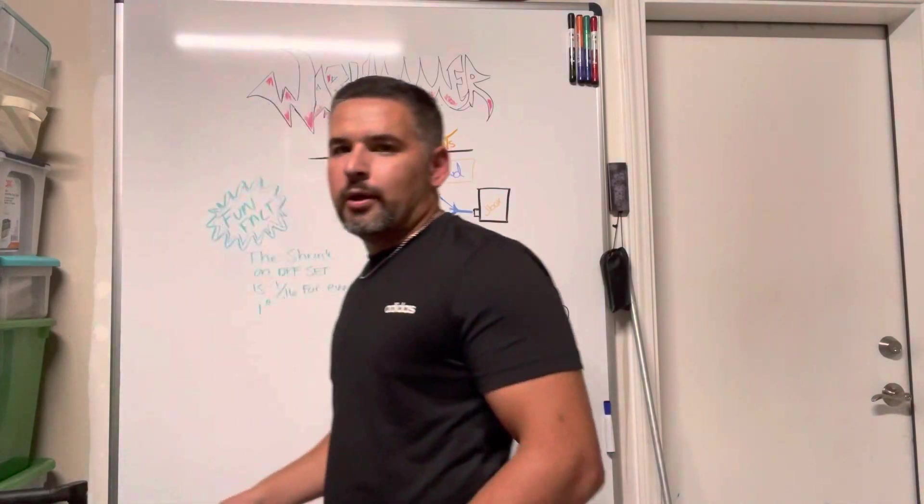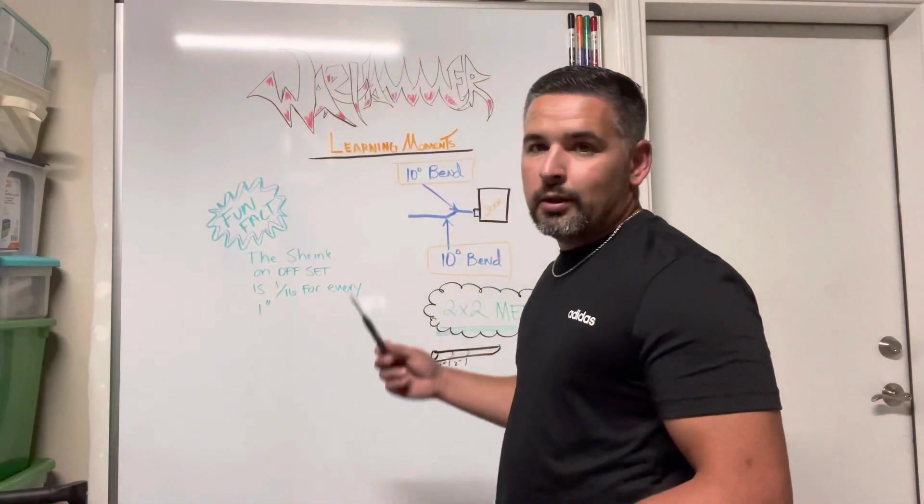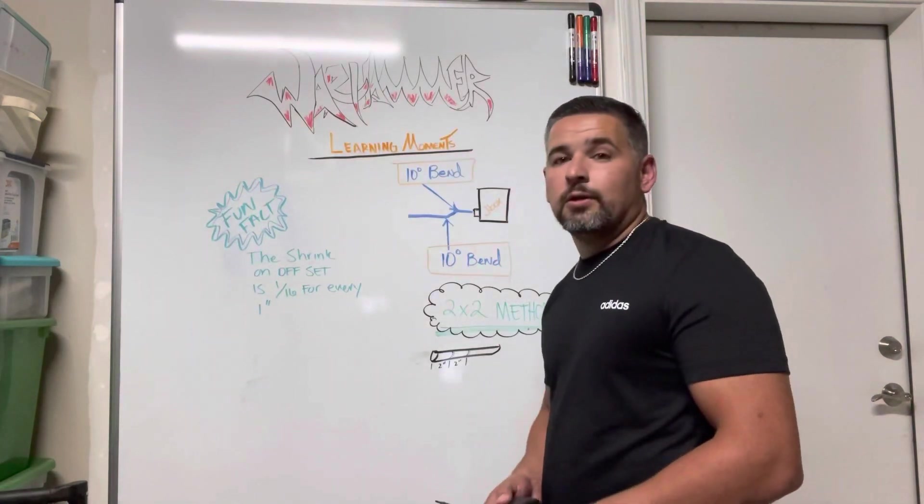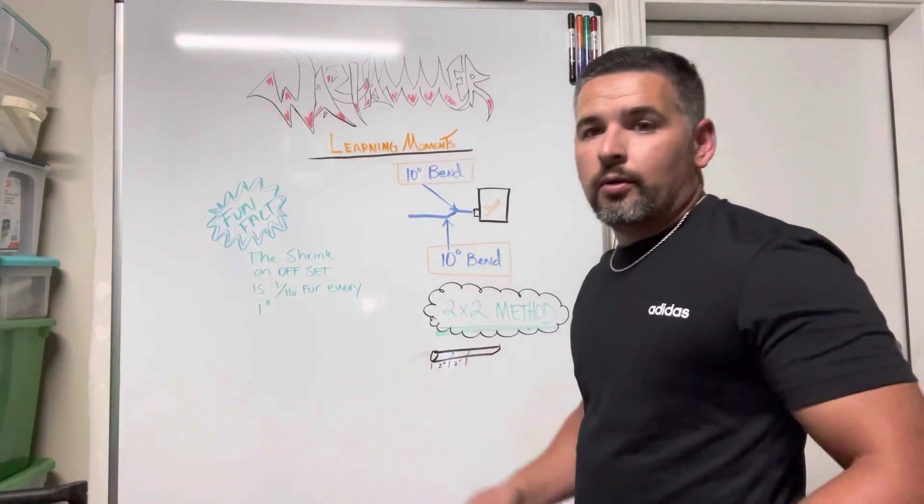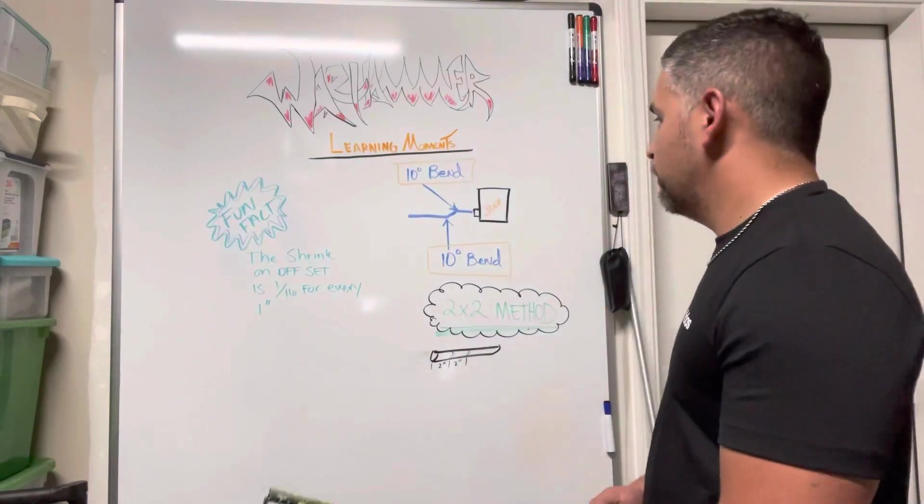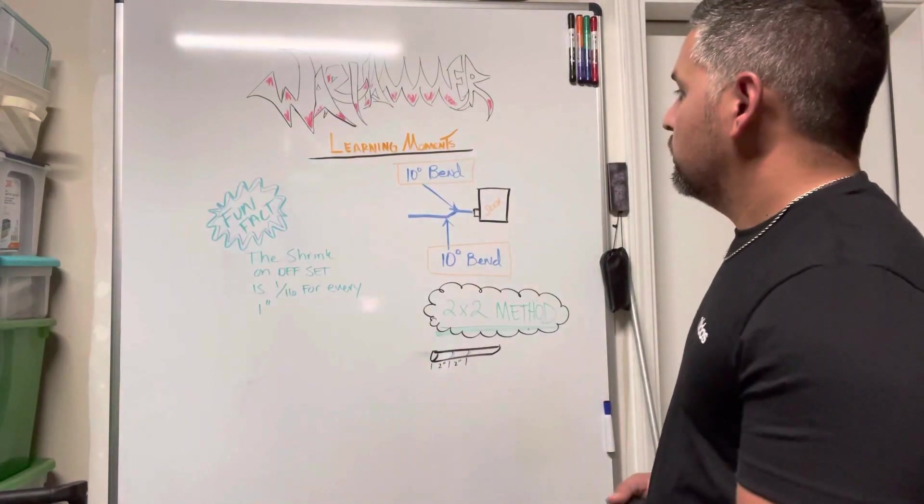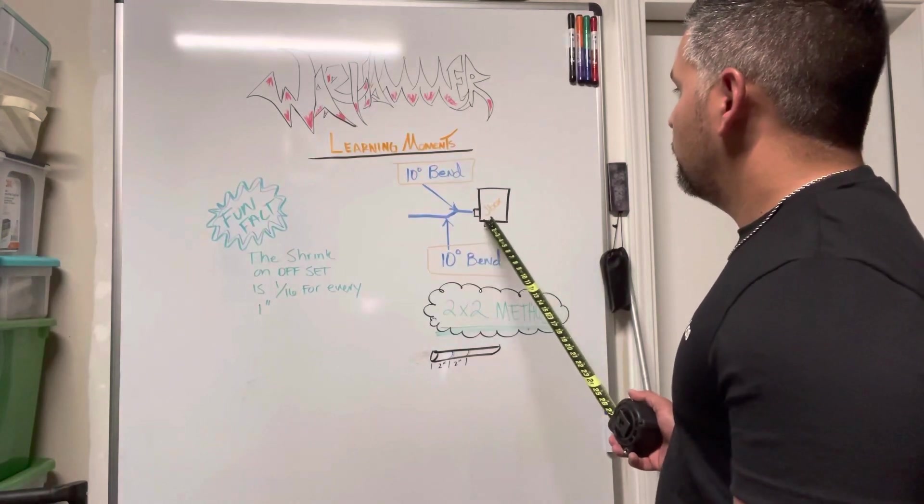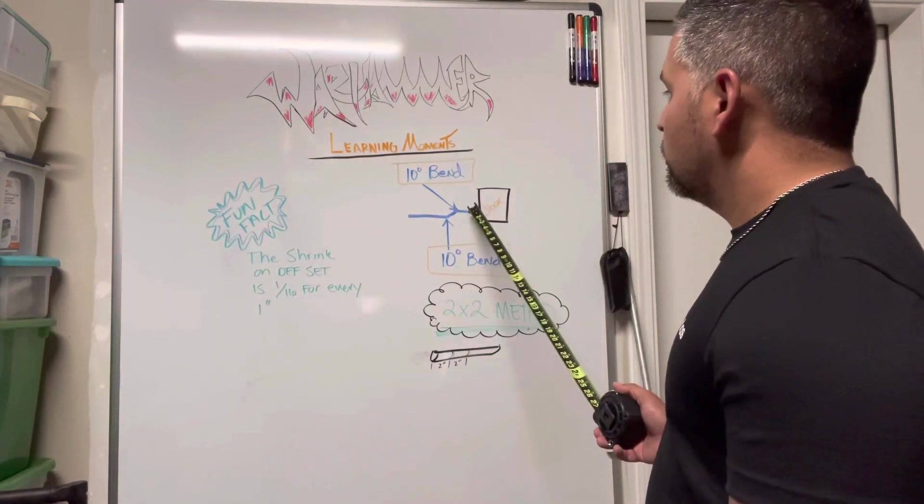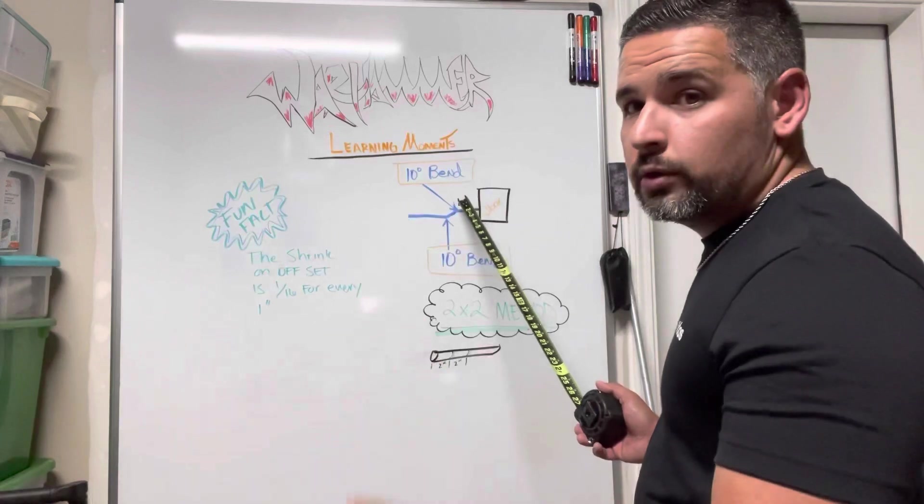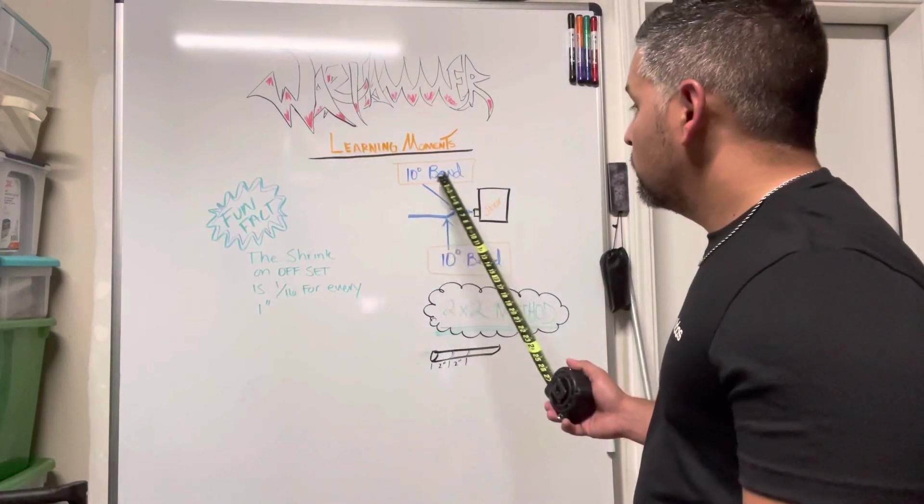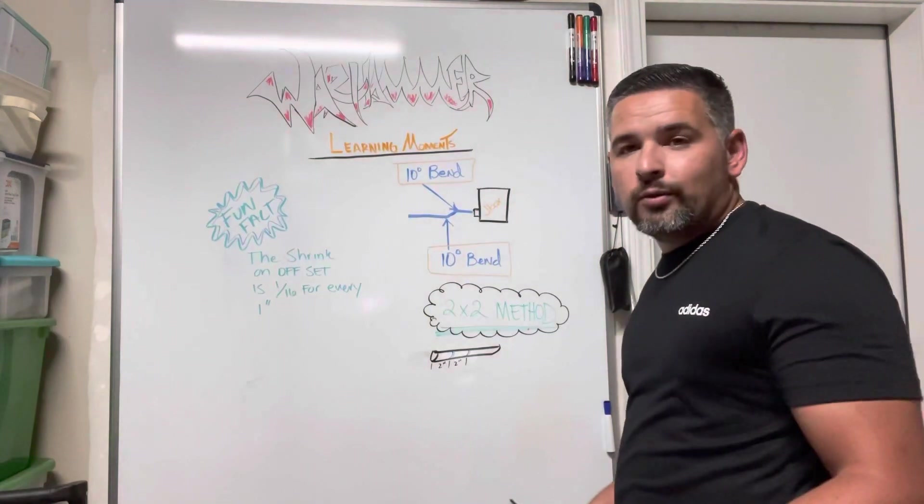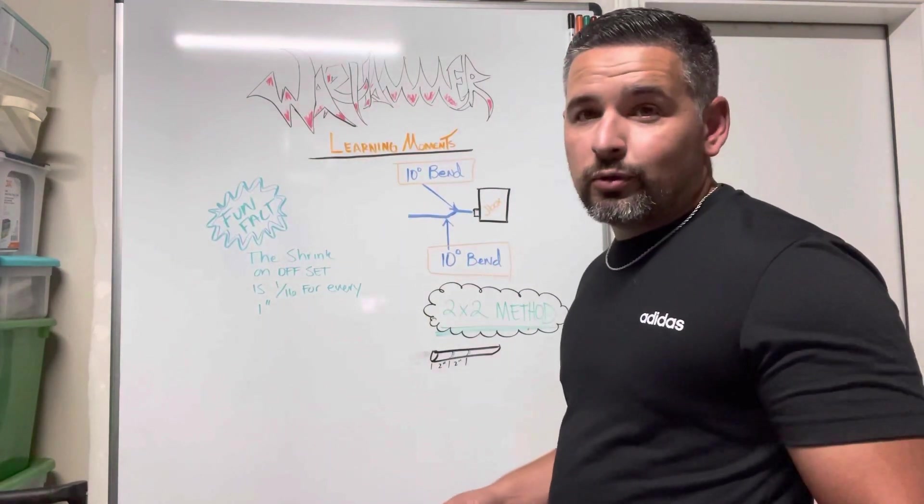All right, so I'm going to kind of explain to you guys the overall deal with this. There's not a lot of craziness into this, so hopefully this will be nice and simple. With your box offsets, here's your J-box, that's your connector. You're basically going to have two 10-degree bends.